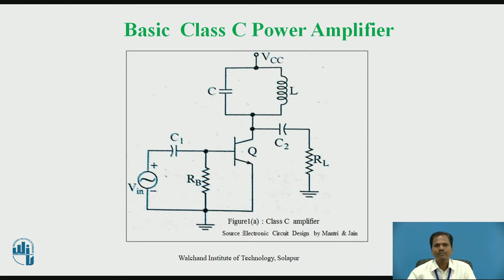This diode clamper clamps some negative portion of the input AC signal with respect to zero level. When the emitter-base diode conducts, the operating point of the Class C power amplifier moves towards the saturation region. Due to the resonant action of the parallel tank circuit, the output signal is supposed to be a sine wave signal. If the output tank circuit — which consists of an inductor and capacitor — is tuned to the fundamental frequency of the signal under amplification, the parallel reactance of the tank circuit becomes infinite.